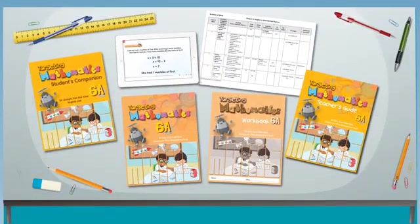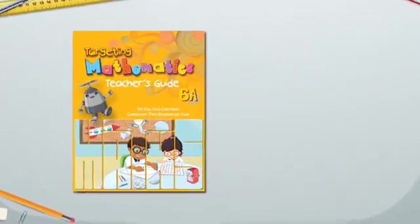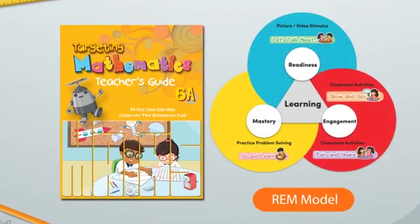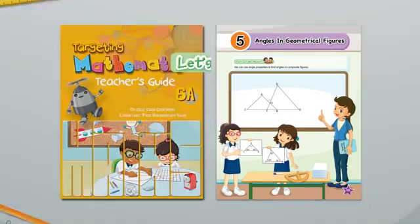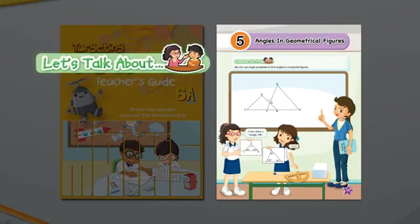Targeting Mathematics comprises a comprehensive resource package for both learners and teachers. The teacher's guide takes after the MOE's REM model for effective instruction. The readiness section provides a picture stimulus context that offers a non-threatening environment for pupils to talk about real-life examples of mathematical ideas to help them ease into the main lesson.